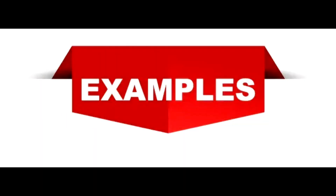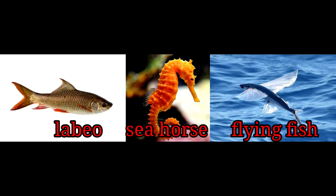They are cold-blooded animals. Some examples of Class Pisces are Labeo, seahorse, flying fish, etc.